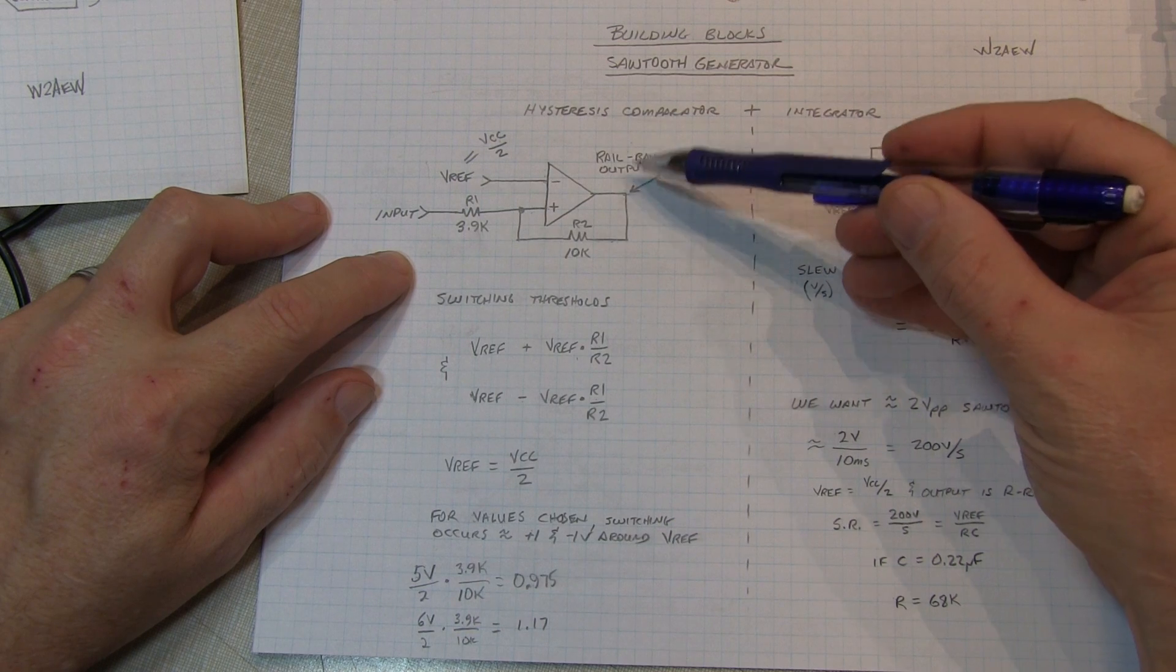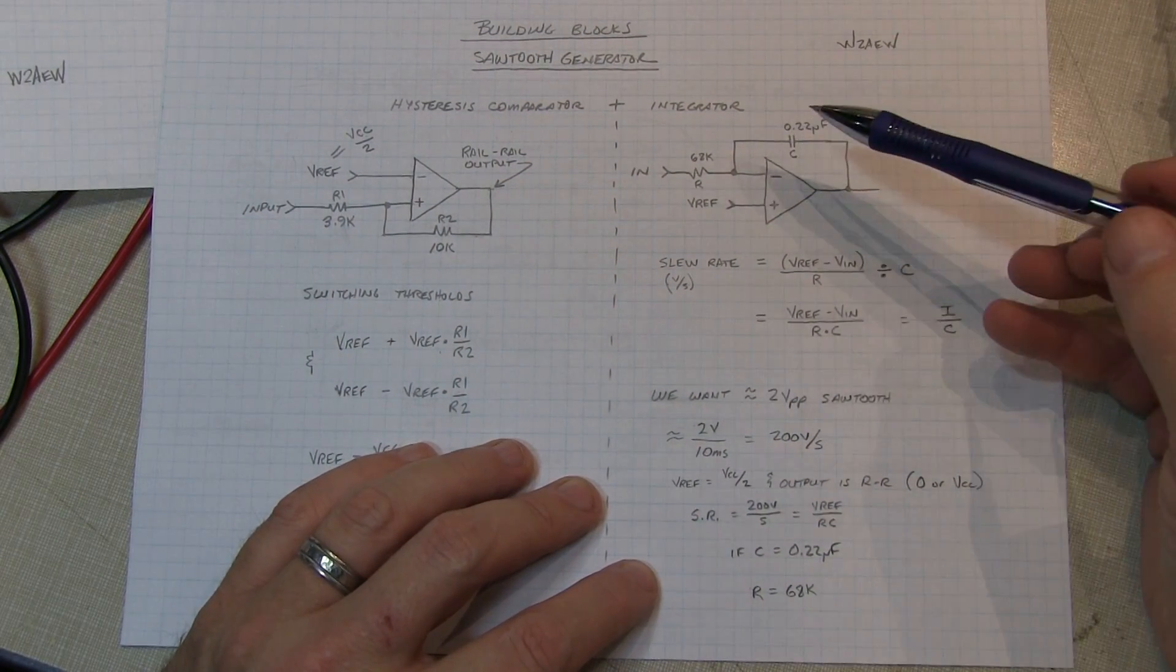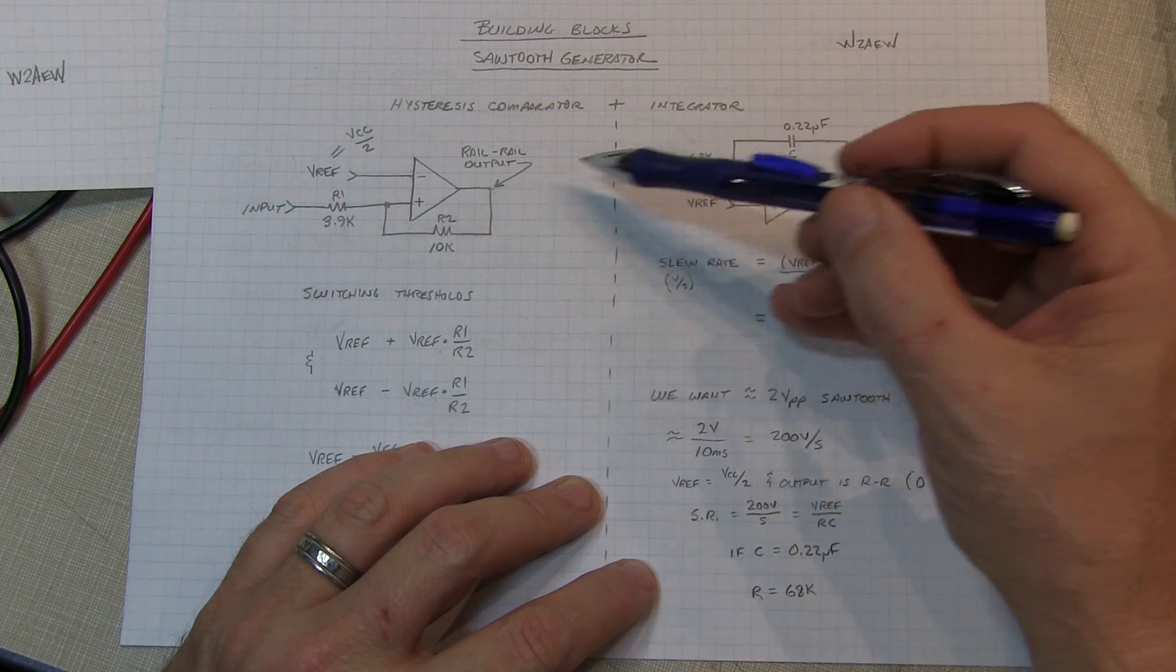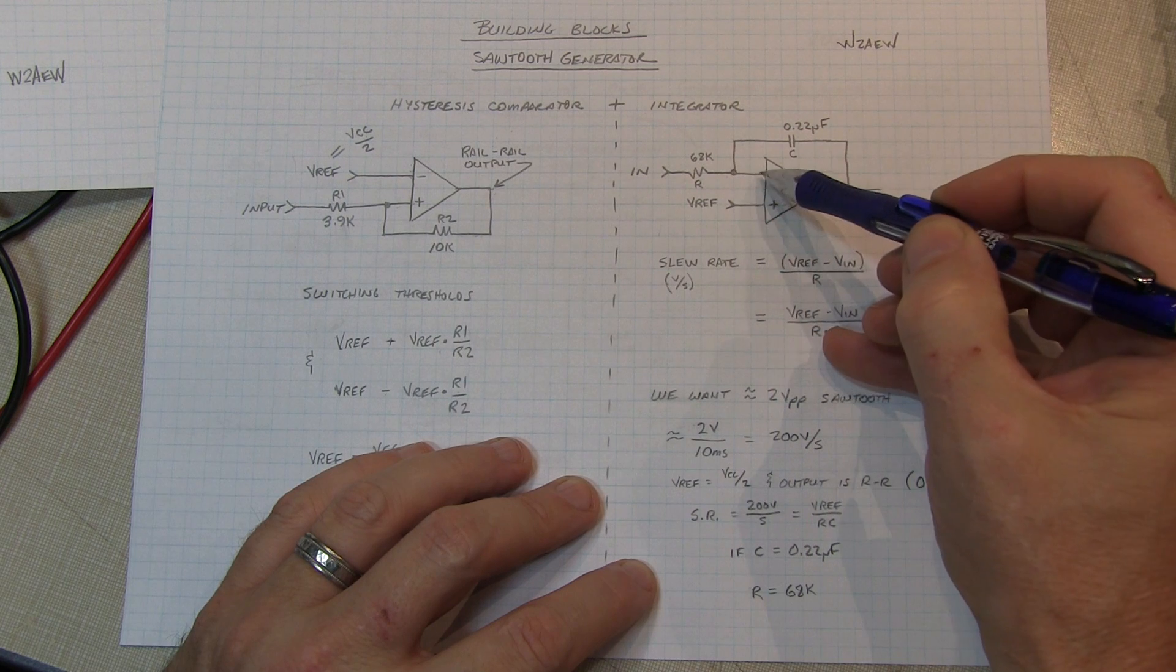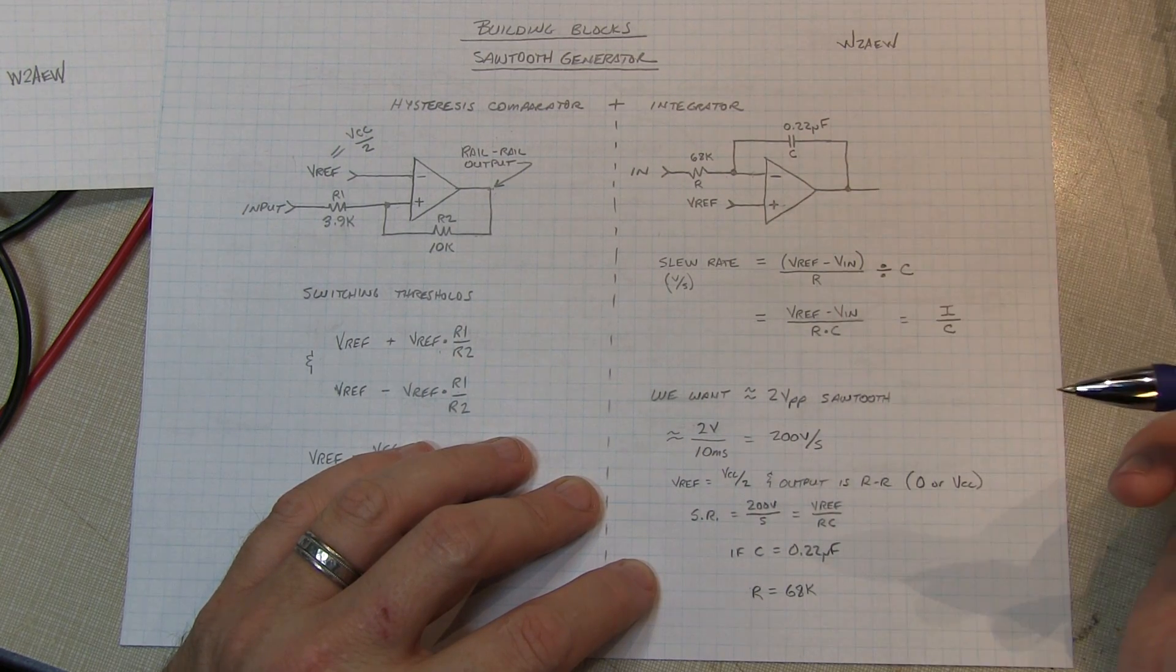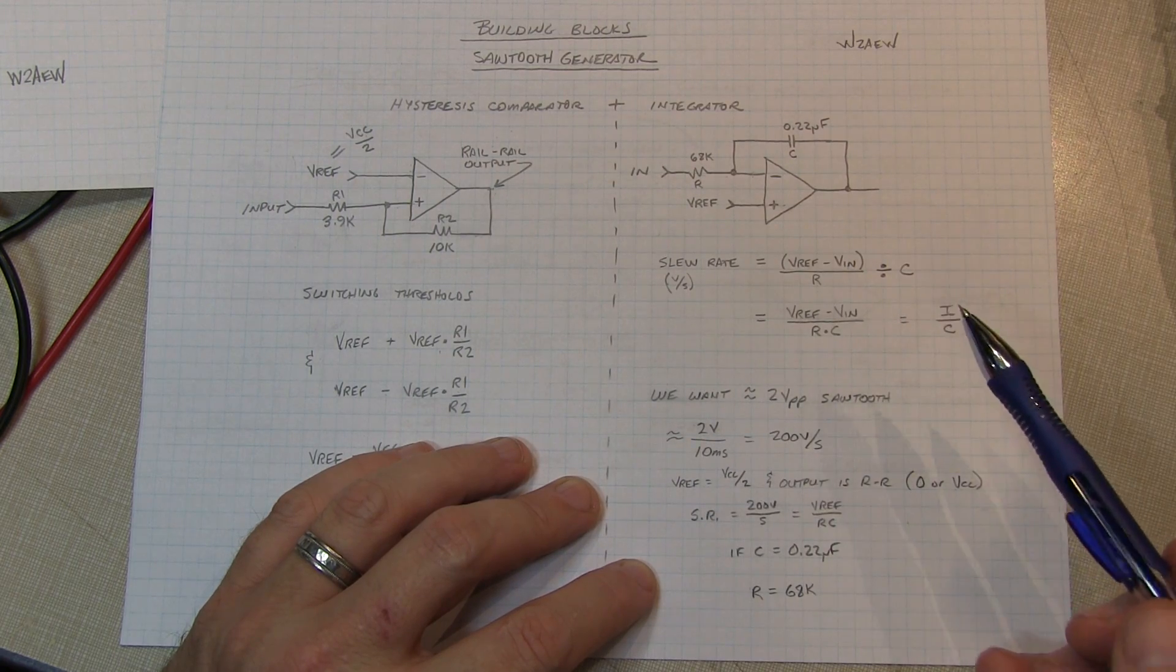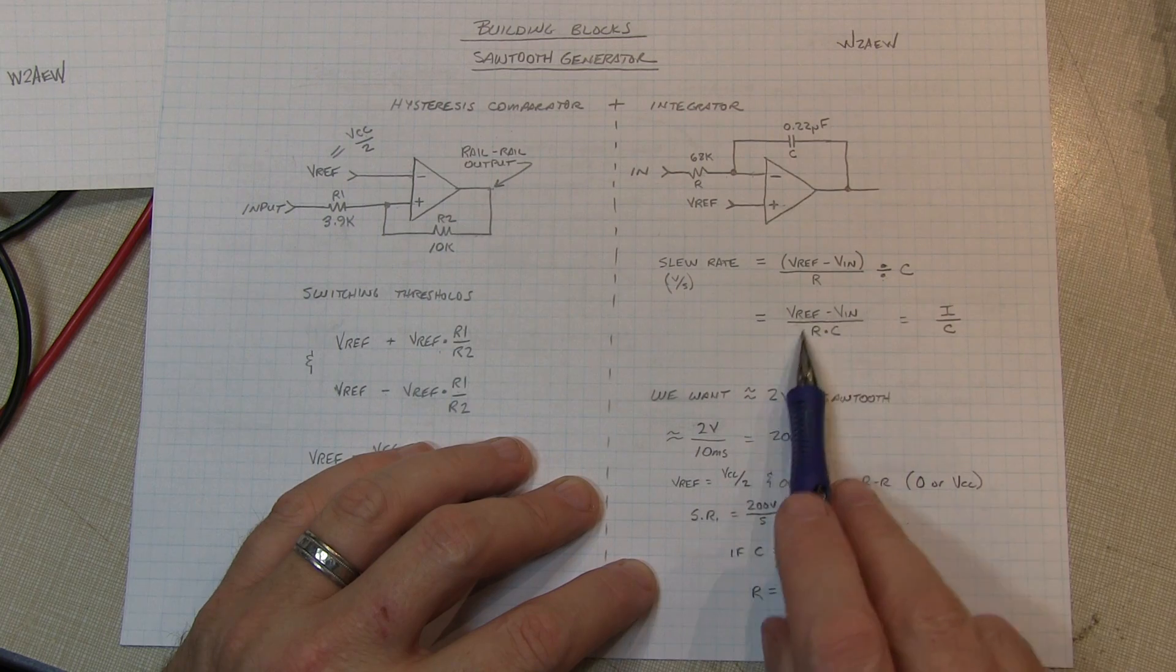Since the output of this rail-to-rail comparator is going between the positive rail and ground, or VCC and ground, that's the input now to our integrator circuit. Now the integrator works quite simply. Remember, no current flows in the input of an op-amp. So let's say that this non-inverting input is sitting at that same Vref, which is VCC over 2, and the input here coming from that comparator is sitting at ground. So that means that I'm going to have VCC over 2 and ground here, so some current is going to flow in that direction. Since no current flows here, that same fixed current flows in that capacitor. Now a fixed current flowing through a capacitor causes a linear change in voltage. And that's determined by these equations here. Now in our case, the voltage across this resistor is going to be Vref minus Vin, divided by that resistor value, in our case 68K ohms, and that divided by the capacitance value gives us our slew rate in volts per second.